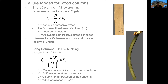We also have intermediate columns where we can have both crushing and buckling. Finally, we have long columns — the normal columns that we calculate — and they fail by buckling because they have the possibility of developing curvature when a weight is placed on top. Those columns are calculated according to properties formulated by Euler: the modulus of elasticity, thickness, column length, and the radius of gyration.